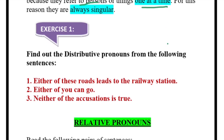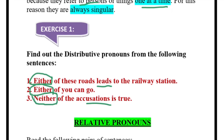Exercise one: find out the distributive pronouns from the following sentences. 'Either of these roads leads to the railway station' — 'either' is the distributive pronoun. 'Either of you can go' — 'either' again. 'Neither of the accusations is true' — 'neither' is the distributive pronoun. So 'no one, none of the accusations is true.'